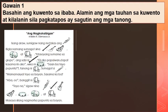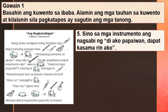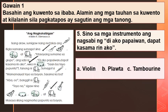Ikalimang bilang: Sino sa mga instrumento ang nagsabi ng "Di ako papaiwan. Dapat kasama rin ako"? A. Violin, B. Plauta, C. Tamborin.